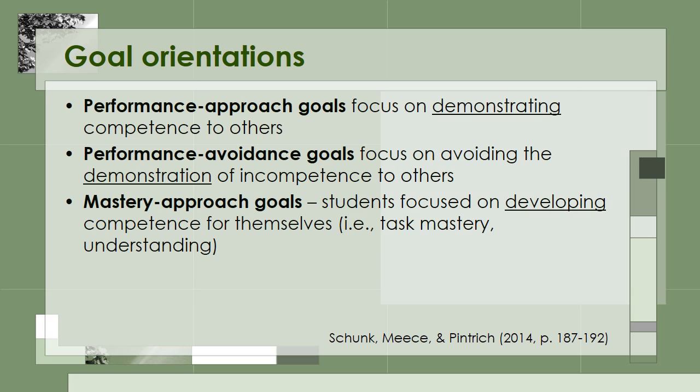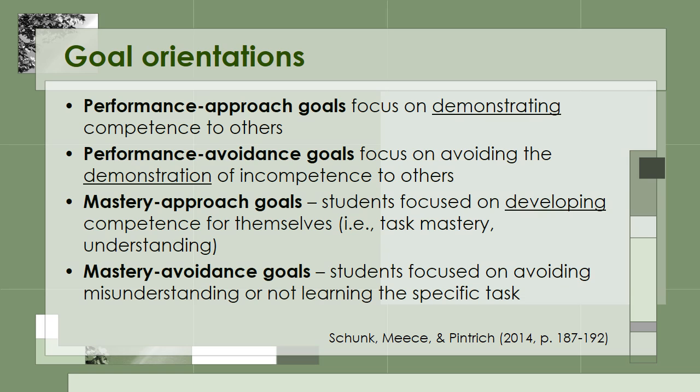For mastery goals, the first one is mastery approach goals, for which students are focused on developing competence for themselves. That is, they want to master the task and understand it — they're trying to learn the information. For mastery avoidance goals, students are focused on avoiding misunderstandings or not learning the specific task. This one can be more difficult to understand, so let me give you two examples.